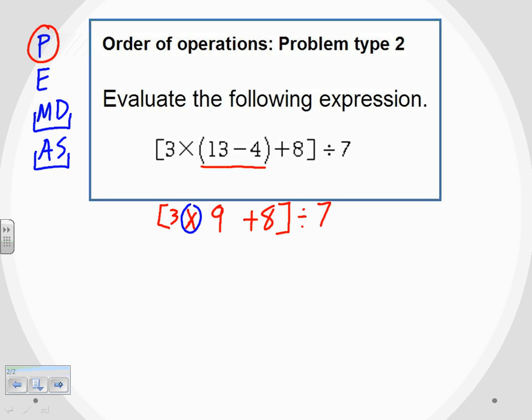So again, I'm only going to do that one operation in my next step. Three times nine is 27. I'm going to bring down that bracket plus the eight. I'm going to bring that down and divide it by seven. Now notice I'm still working on the parentheses, but I'm trying to do the different things inside of the parentheses. So I have to keep referring back to my order of operations.